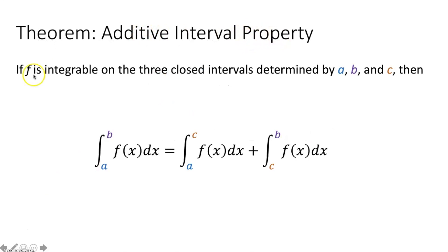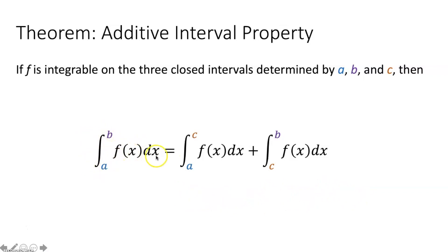Now let's talk about the additive interval property. This says if f is integrable on the three closed intervals determined by a, b, and c, then the integral from a to b of f of x dx equals the integral from a to c of f of x dx plus the integral from c to b of f of x dx. So if c is somewhere between a and b, you can add up those two areas under the curve to equal the entire area under the curve on the interval from a to b.